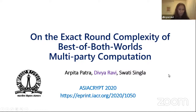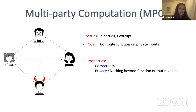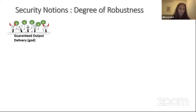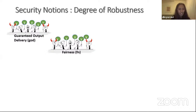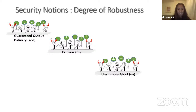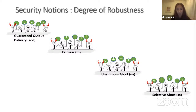This talk is on the exact round complexity of best of both worlds Multi-Party Computation, joint work with Apita Patra and Swati Singla. Suppose you have N mutually distrusting parties, out of which T are corrupt, and they want to compute some combined function on their private inputs. MPC allows them to do so while ensuring the output is correct and nothing beyond the output is revealed. There are various notions of MPC: the strongest is guaranteed output delivery, then fairness, then unanimous abort, and the weakest is selective abort.